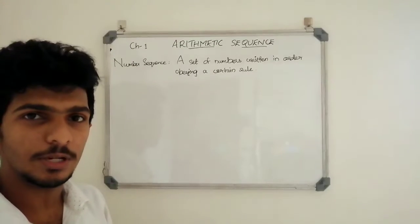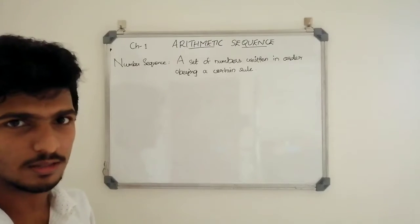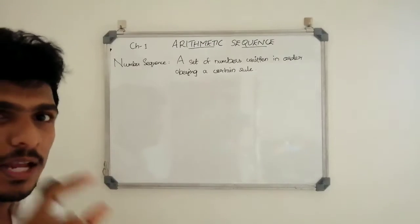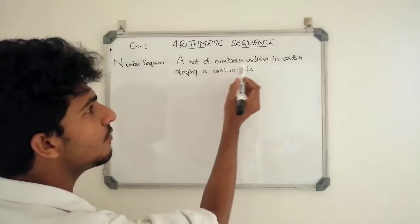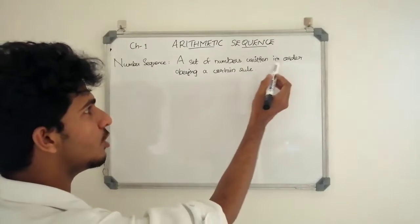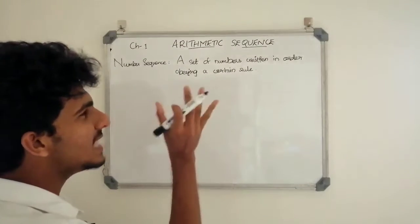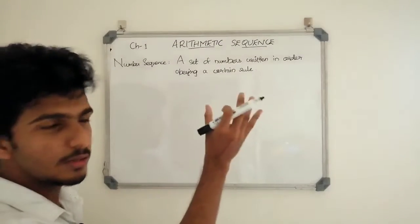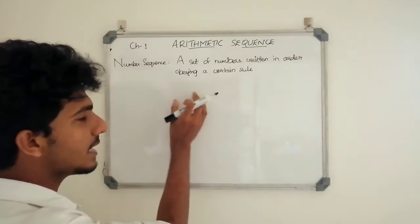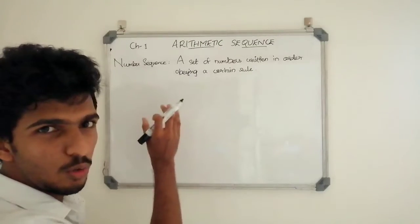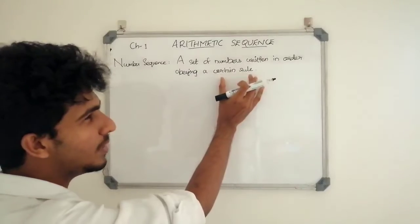Now let's start with arithmetic sequences. We are going to discuss the number sequence. A number sequence is a set of numbers written in order, obeying a certain rule.